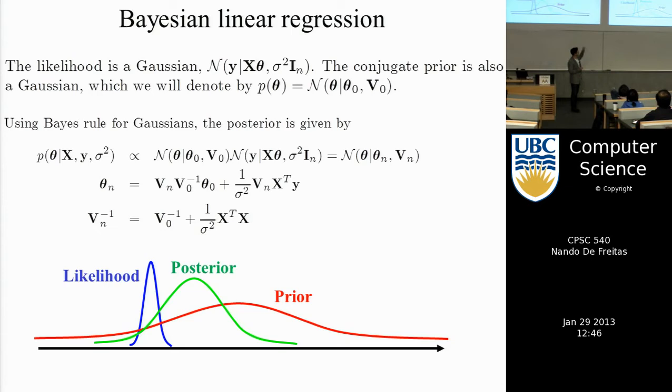But that picture sort of captures everything. If you have a Gaussian prior, you multiply it times the Gaussian likelihood, the answer is that green curve, the posterior. And the green curve is sort of like the prior and sort of like the likelihood. So it's in between.